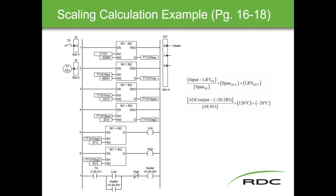In the heater control logic: if temperature switch one is closed and the low temperature bit is true and the high temperature bit is not true, the heater turns on. When the temperature rises to 53°C, the high temperature coil energizes, breaking the rung and turning the heater off.